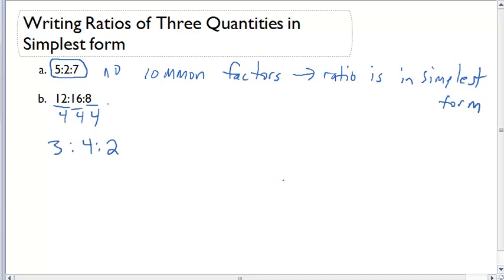One thing I want to illustrate here is what happens if you can't find out right away what the greatest common factor is. Let's say you were looking at 12 to 16 to 8, and you knew right away, okay, I know they're all divisible by 2. Well, let's do that. Let's divide all the terms by 2.